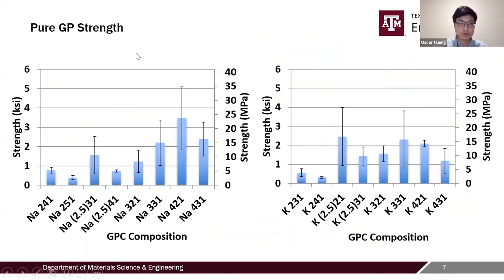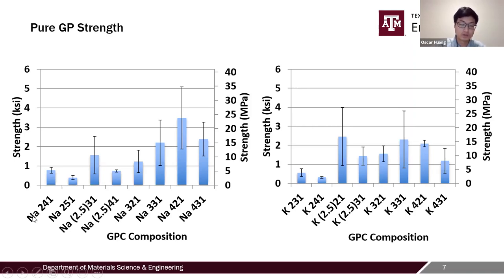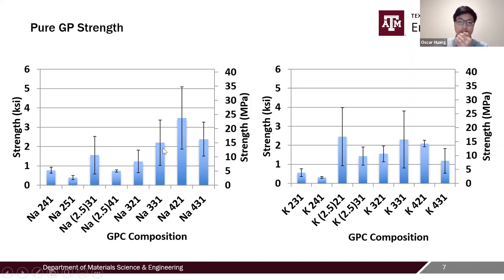Looking at the pure geopolymer strength results: we have compositions with the same silicon-to-aluminum ratio but varying water-to-solids ratios, with sodium on the left and potassium on the right. As a general trend for sodium, increasing the silicon-to-aluminum ratio increases strength. Increasing the water ratio — for example from 241 to 251, or 421 to 431 — causes a significant drop in strength, because more water makes the sample more porous. A very interesting trend is that the silicon-to-aluminum ratio significantly affects strength.